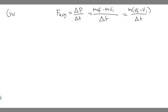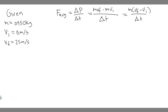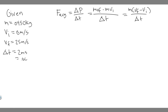Let's write our givens. They tell us the mass of the golf ball is 0.045 kilograms. It's initially at rest, so the initial velocity v-i is zero. It's hit and given a speed of 25 meters per second, meaning the final velocity v-f is 25 meters per second. We also know the time of contact — the club and ball are in contact for 2 milliseconds. Since our formula uses seconds, we divide by 1,000, giving us 0.002 seconds.